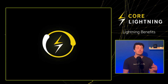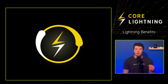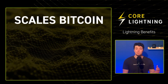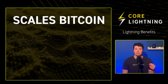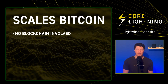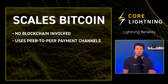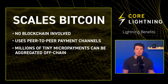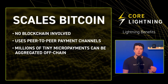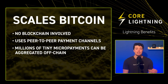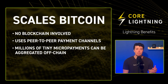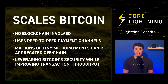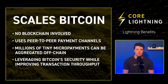The Lightning Network offers many benefits — there are just too many to list in this video, so let's cover some of the biggest ones. First, it scales Bitcoin. Lightning is the ultimate scaling solution for Bitcoin because there is no blockchain involved, but peer-to-peer payment channels. With Lightning, millions of tiny micropayments can be aggregated off-chain per day to avoid bloating the mainchain, and then eventually broadcast across the Bitcoin mainchain for final settlement, leveraging Bitcoin security while also improving transaction throughput and helping Bitcoin scale globally.